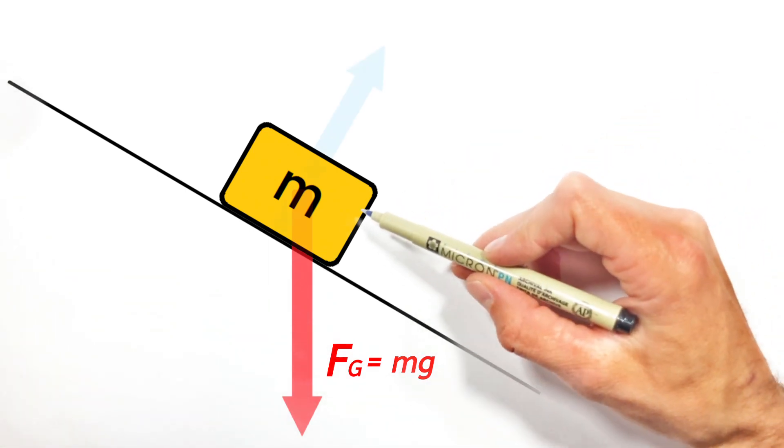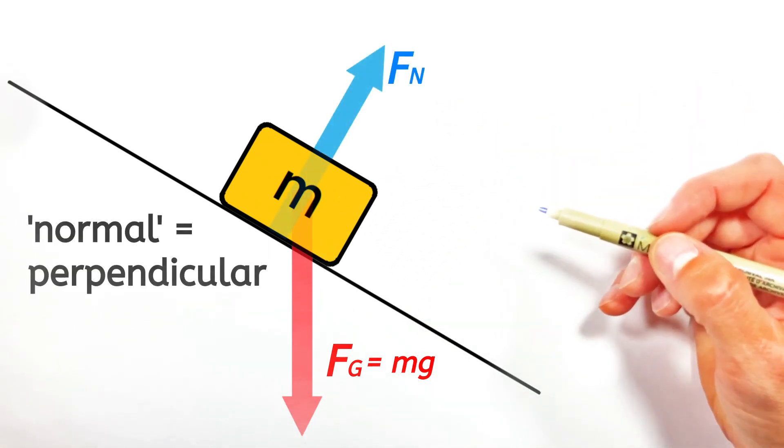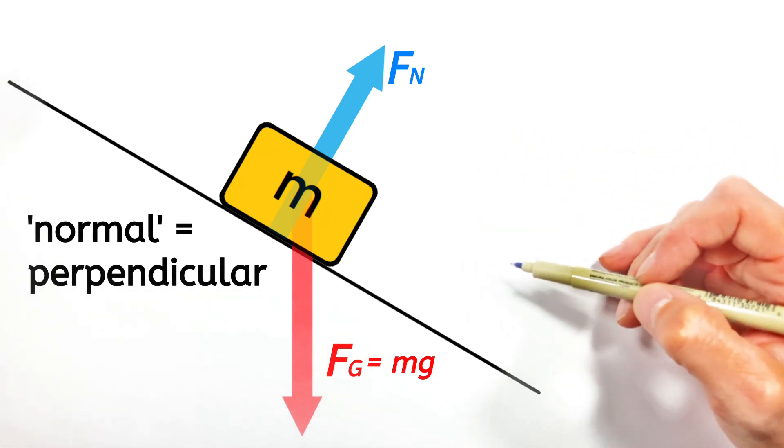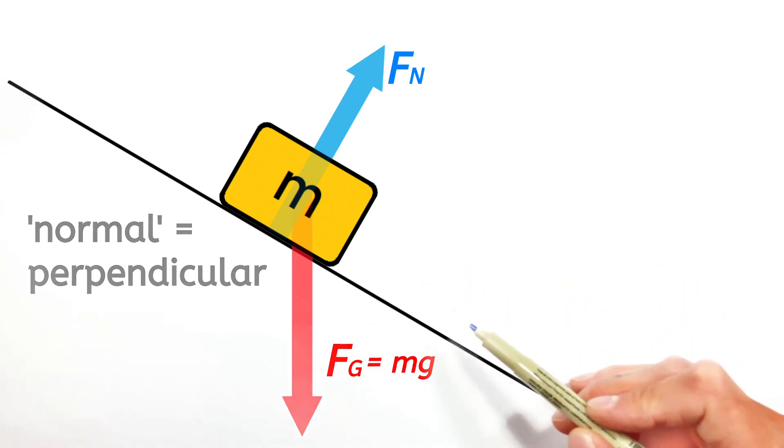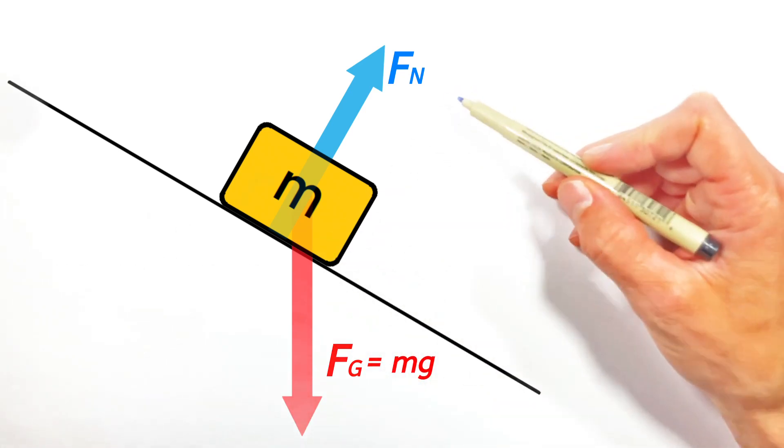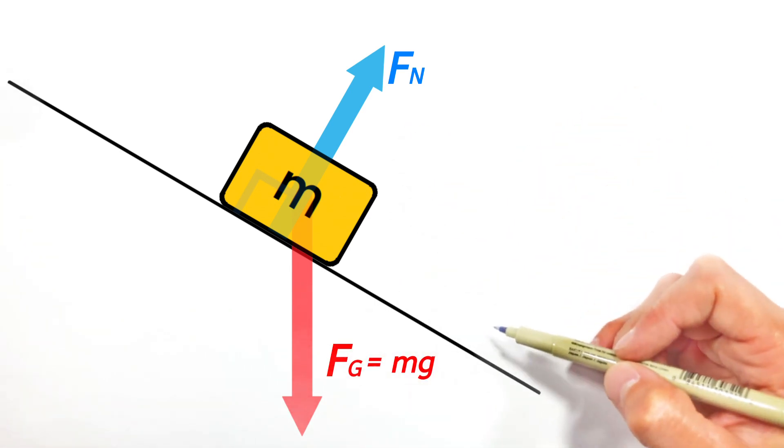And the other force is the normal force. You see, in physics and math, the word normal means perpendicular to a surface or an object. And so the normal force between this block and the hill is perpendicular to the hill. And those are the only two forces acting on the block.